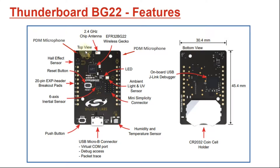Looking at the top view of the development board, we have the EFR32 BG22 wireless Gecko main microcontroller, which is based on an ARM Cortex-M. We have two PDM microphones which are used for voice, and one hall effect sensor which is used for proximity as well as speed.